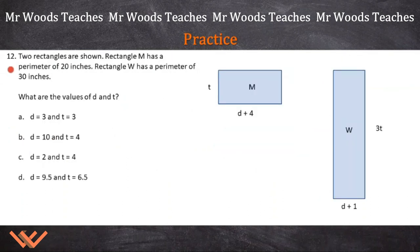Let's take a look at number 12. Two rectangles are shown. Rectangle M has a perimeter of 20 inches. Rectangle W has a perimeter of 30 inches. So I'm going to put here P is equal to 20 inches and P is equal to 30 inches just to make sure that I know that before I do anything else. So this is my given information. It says, what are the values of D and T? So we have these unknowns T and D here. We know that T plus D plus 4 plus T plus D plus 4 is going to equal to 20. So I can write that out.